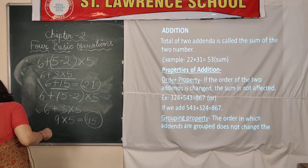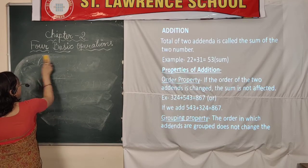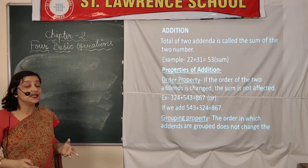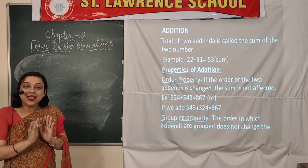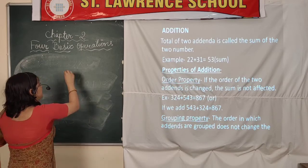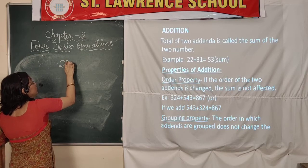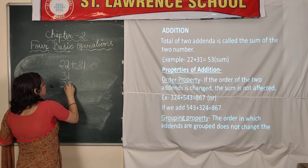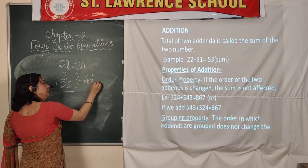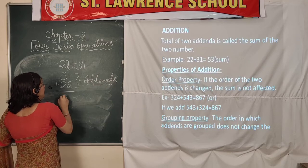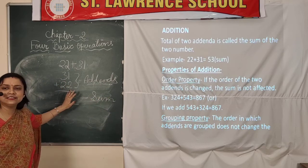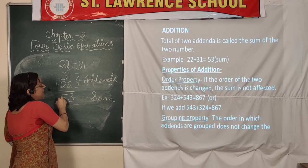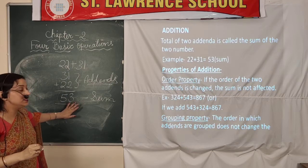Now we will take addition. The total of 2 addends is called the sum of the 2 numbers. Addends are the 2 numbers which we add to get the sum. For example, if we take 22 plus 31 — these 2 numbers are both addends. 2 plus 1 is 3 and 3 plus 2 is 5, so we get 53. This 53 is our sum.